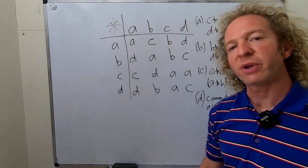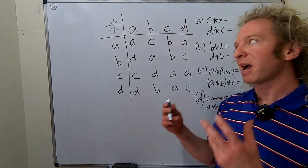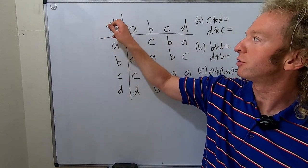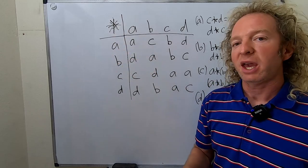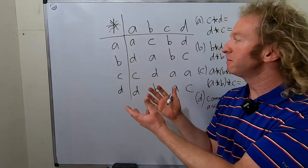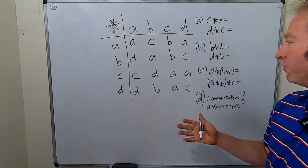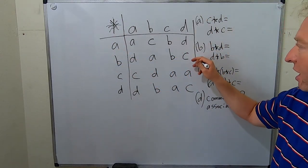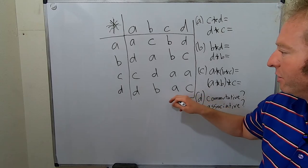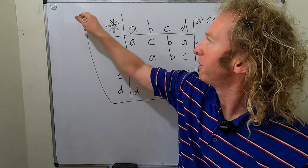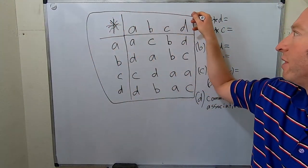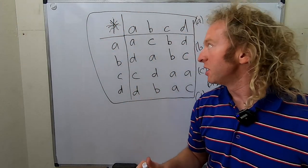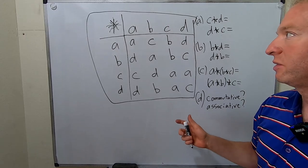In this video we have a binary operation called star and it's defined by a table. Let me highlight the table so you can see it a little bit better. That is our table, and here is how it works.